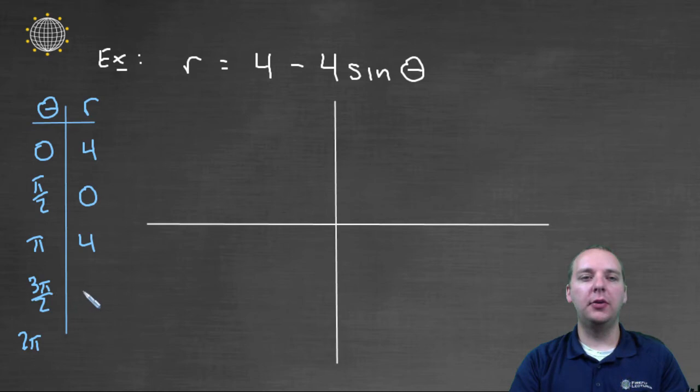If you plug in three pi over two, sine of three pi over two is negative one. And so negative one times four is negative four, and four minus negative four is the same as four plus four, you'd get eight. And then if you plug in two pi, sine of two pi is zero, zero times four is zero, four minus zero is four. So we get these theta r values, or r theta values.